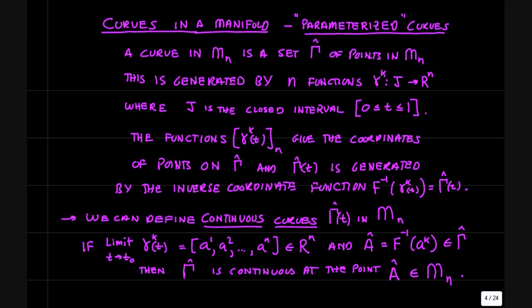First topic, curves in a manifold, and these are usually called parameterized curves. So a curve in the manifold M is a set of points in M, and the set is generated by some functions that are mapping the closed interval J. So J is an interval of real numbers between zero and one. You can make this interval other endpoints, but zero and one is fine for what we need here.